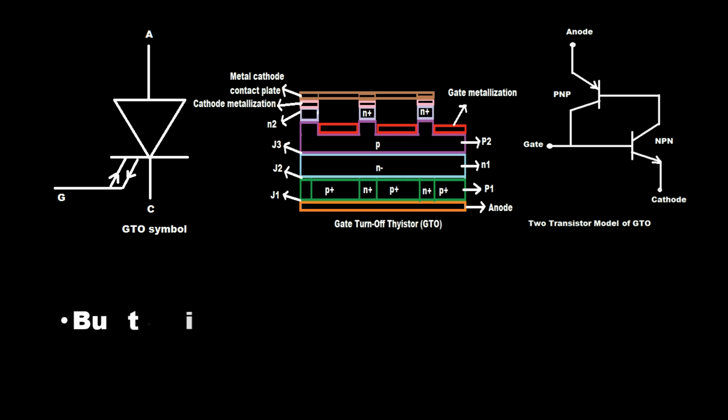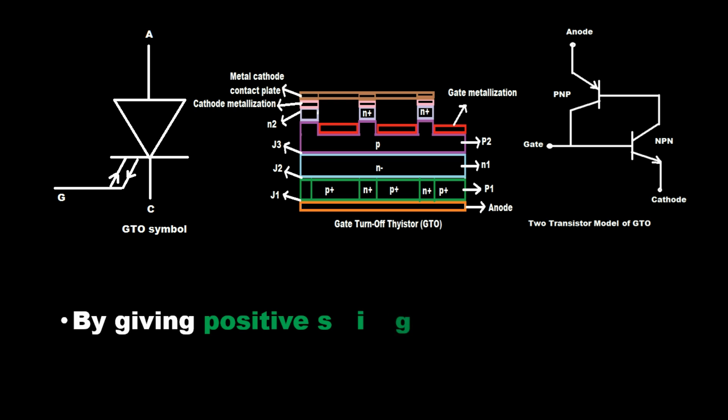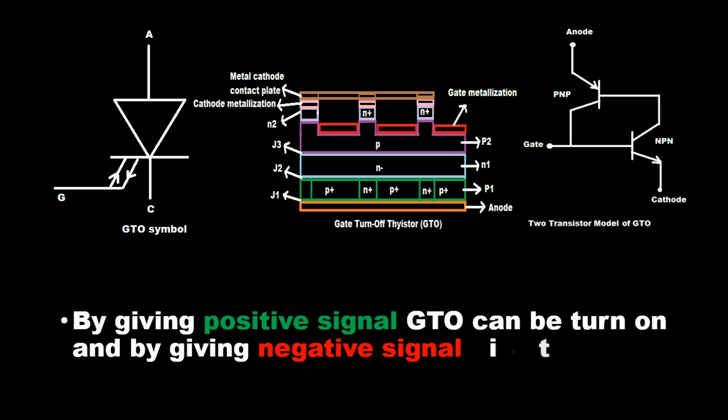But in case of gate turn off thyristor, GTO, we can turn it on and off from its gate terminal. By giving positive signal GTO can be turn on and by giving negative signal it can be turn off.